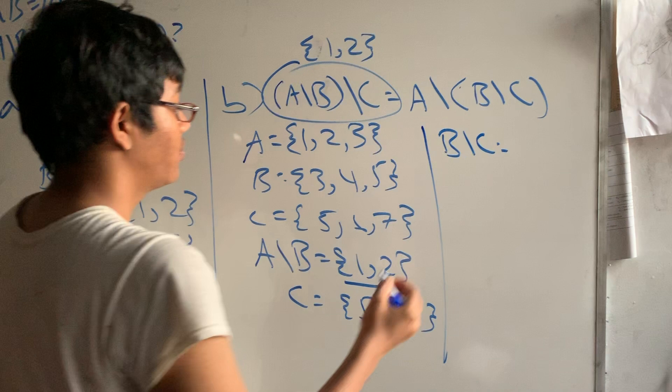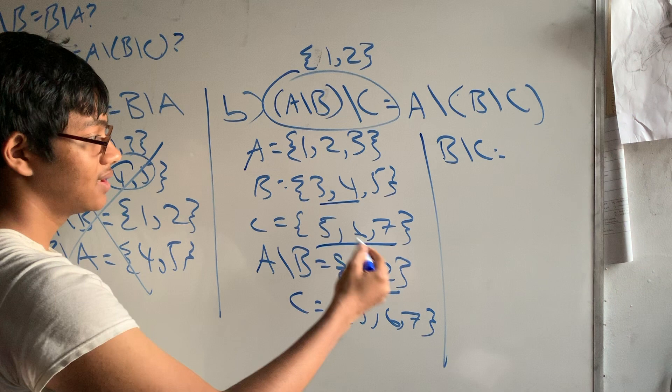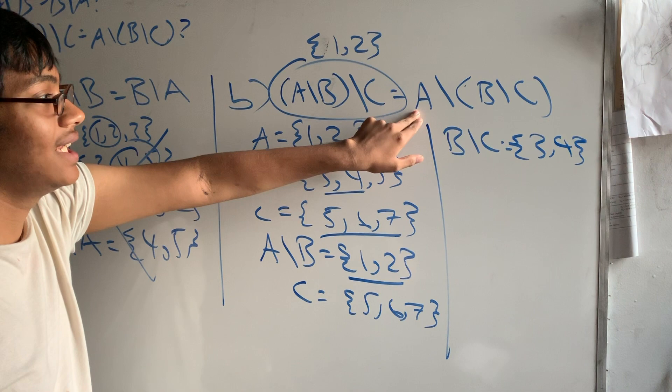So the difference of sets B and C is going to be what? {3, 4} because 3 and 4 do not appear in set C. So {3, 4}.